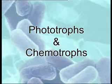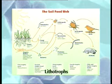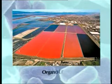Autotrophs can be divided further into two subgroups on the basis of the energy source they use: phototrophs and chemotrophs. The division may also be based on the nature of substances oxidized and the source of electrons. Lithotrophs — from litho meaning rock and troph meaning eaters — utilize inorganic substances as their electron source. Organotrophs, on the other hand, oxidize organic matter for their energy.